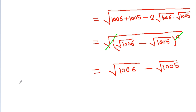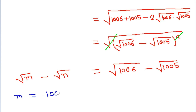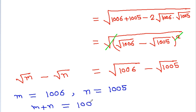It is equal to √m minus √n. So m will be equal to 1006 and n will be equal to 1005. Therefore, m plus n will be equal to 1006 plus 1005, which is 2011.